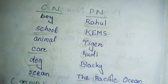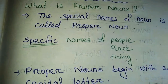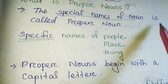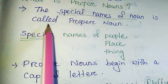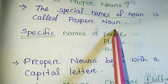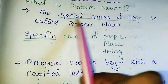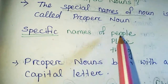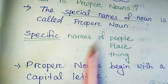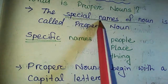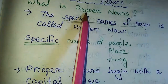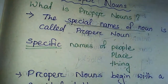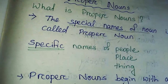Now you are clear about all these things. So what is proper noun? The special names of noun is called proper noun. The specific names of people, place, and thing are all called special names, and those are included in proper noun. It's all about your chapter. Thank you.